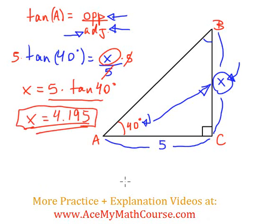Of course, you could have also gone tangent 40 first, you can calculate that first, then multiply by 5, that would have gotten the same answer.